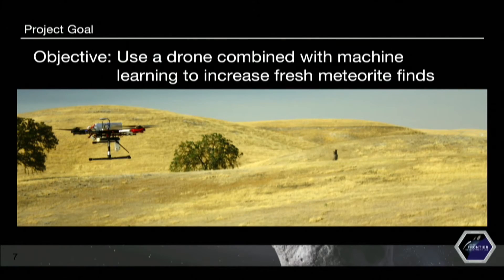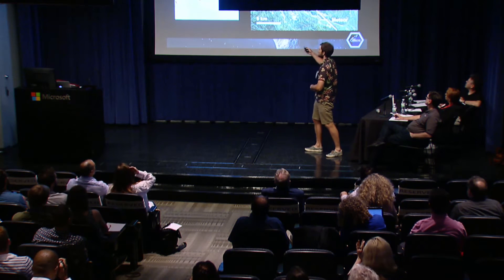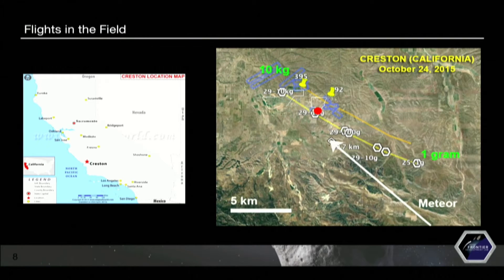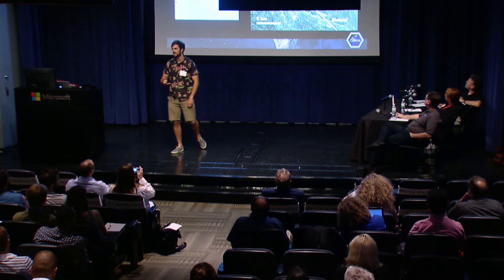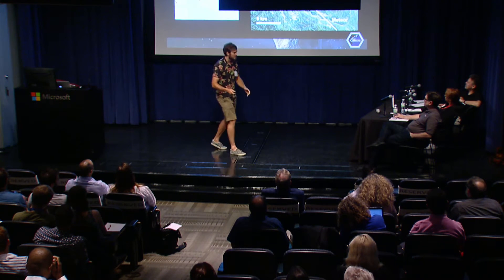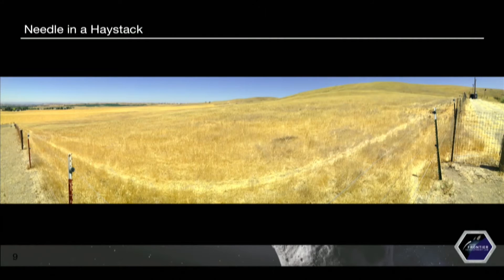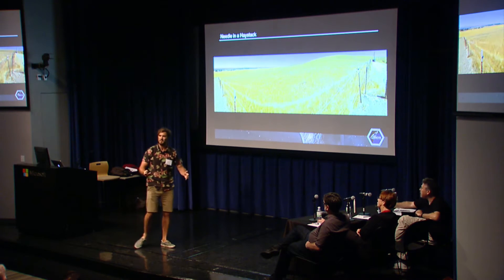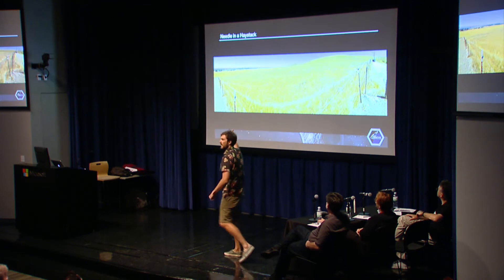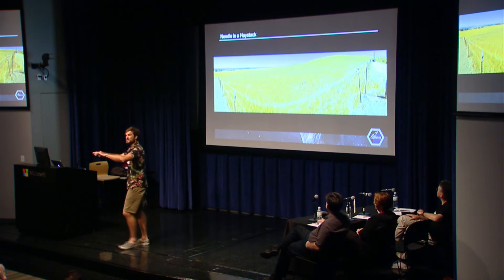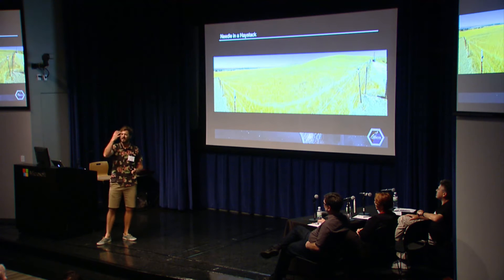We actually did this — we took a drone out into the field. We went to a place called Creston, where recently there was a fresh meteorite fall spotted by one of Peter's cameras. One of the main things that really struck me when we got out into this field, even though Peter had been telling me for five weeks that this is one of the hardest things that confront meteorite scientists today — I didn't believe him until I actually went out there. I saw endless dry grass everywhere.